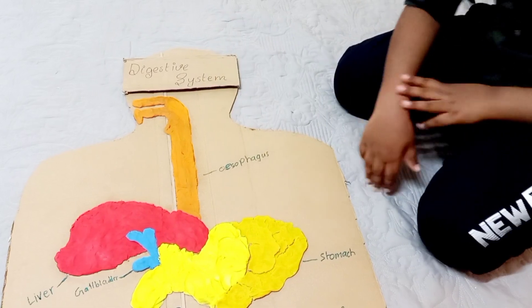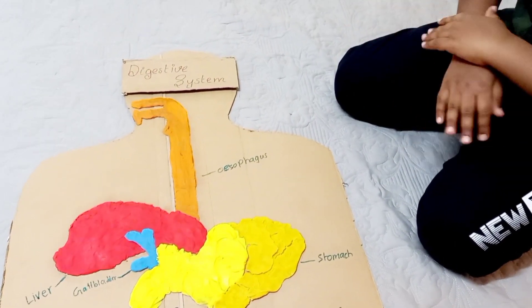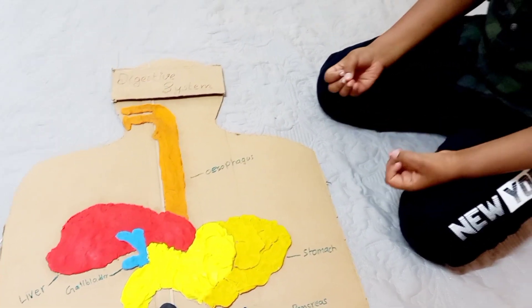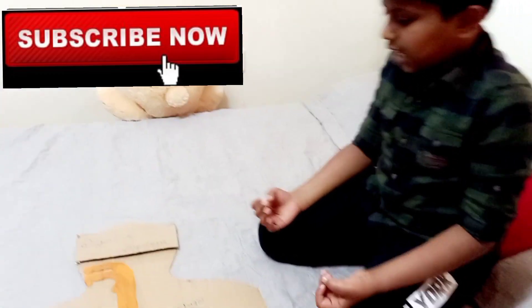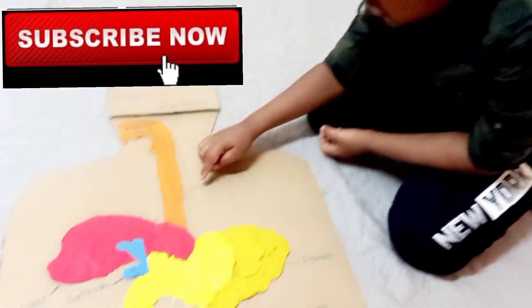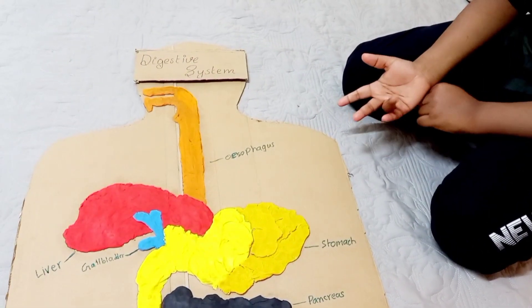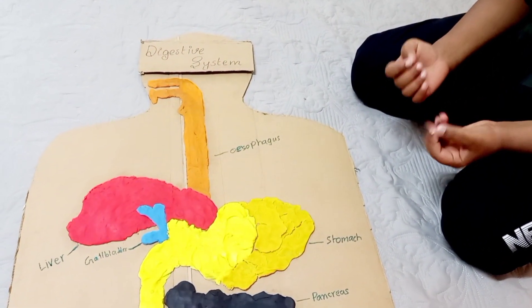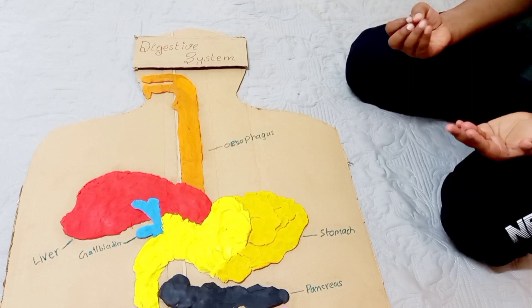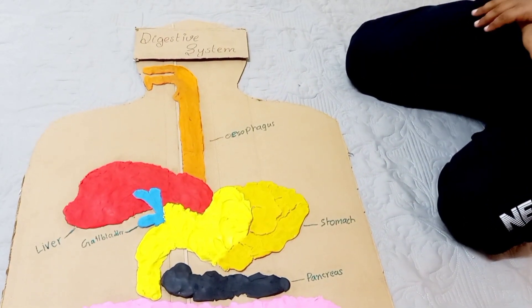The digestive system is made up of the gastrointestinal tract, also called the GI tract or digestive tract, and the liver, pancreas, and gallbladder. The GI tract is a series of hollow organs joined in a long twisting tube from the mouth to the anus.